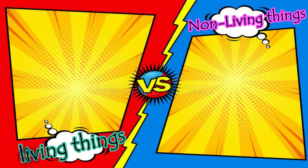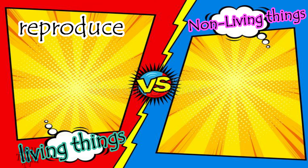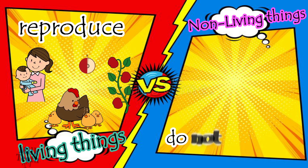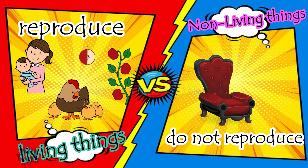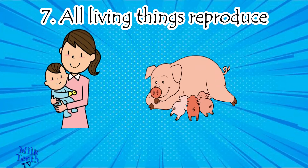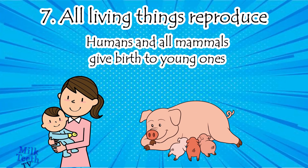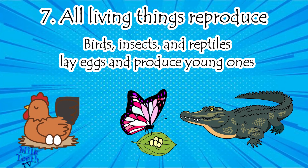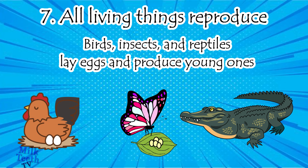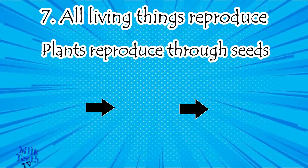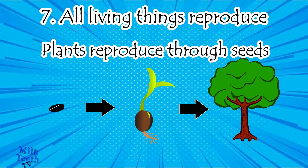The last difference is that all living things reproduce — they produce their young ones — while non-living things do not reproduce. This chair cannot produce a small chair on its own. Humans and all mammals give birth to their young ones, birds, insects, and reptiles lay eggs, and even plants reproduce through seeds — a small seed grows into a seedling and then into a new plant of its own kind.